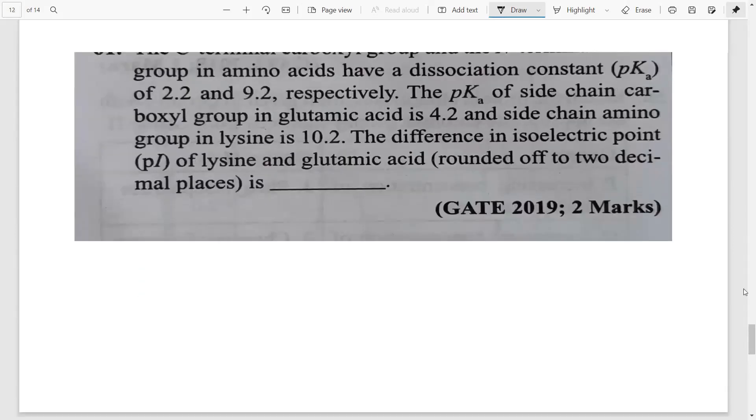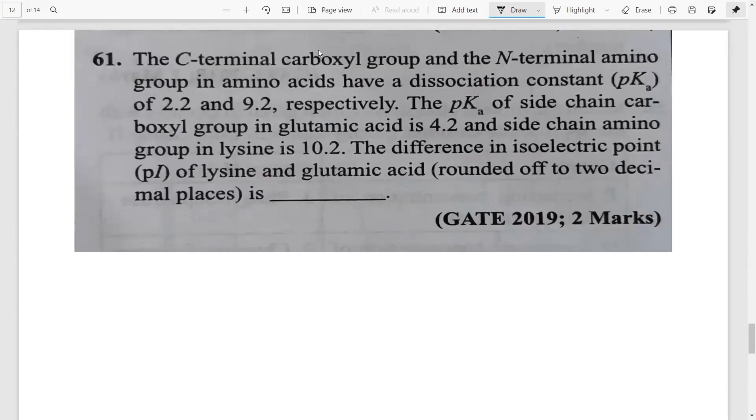Finally this question very simple. They have given you the carboxy group and the N terminus of the amino acids and they have said the values are as follows. So pKa for the C terminus group, C terminus that is the carboxy group is 2.2. This is COOH and for the amino group, for the amino that is the N terminus the value is given as 9.2. This is the NH2 group.